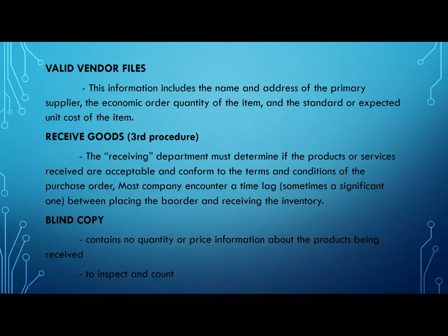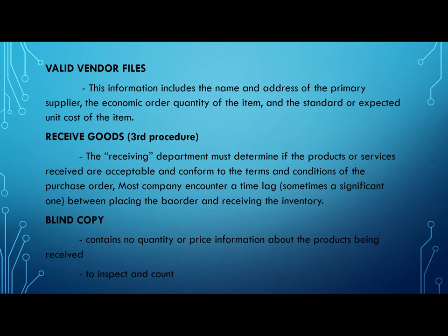Receiving Goods — our third procedure. During this time, copies of the purchase order reside in temporary files in the buyer's department. No economic event has yet occurred. At this point, the firm has received no inventories and incurred no financial obligation. Hence, there is no basis for making a formal entry into any accounting record. However, firms often make memo entries of pending inventory received and associated obligations.